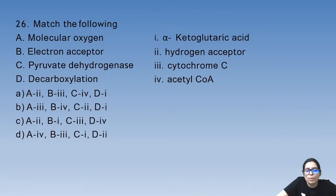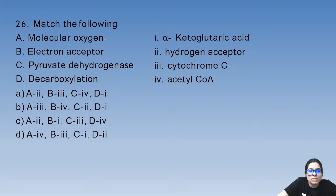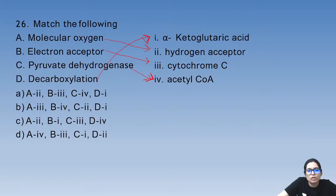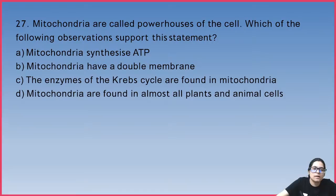Question 26: match the following. Molecular oxygen is a hydrogen acceptor. The electron acceptor is Cytochrome C. Pyruvate dehydrogenase acts on pyruvic acid to produce Acetyl CoA. Decarboxylation of alpha-ketoglutaric acid also occurs. The answer for question 26 is A.